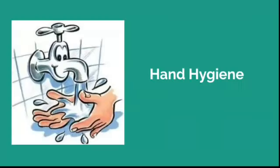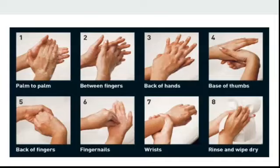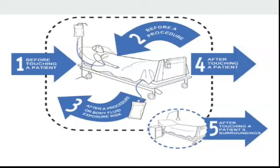The first principle is hand hygiene. There are eight steps in hand hygiene as per WHO. You should wash your hands with soap or hand scrub following these steps: palm to palm, between the fingers, back of hands, base of the thumb, back of the fingers, fingernails, wrist, then rinse and wipe dry — seven steps of hand washing.